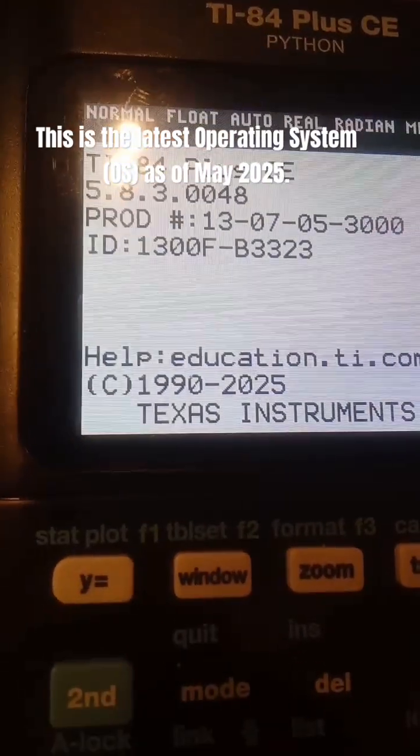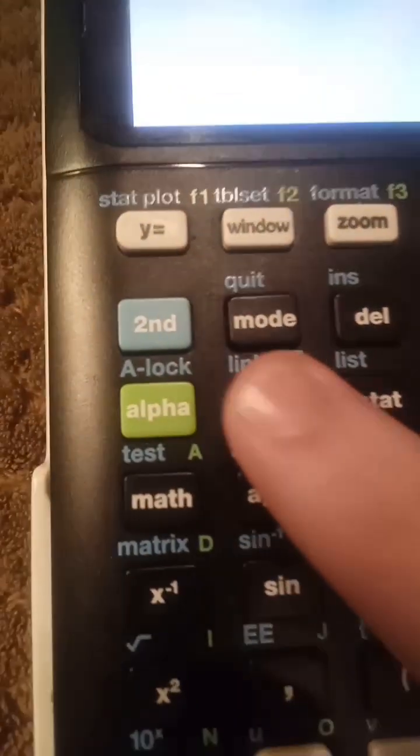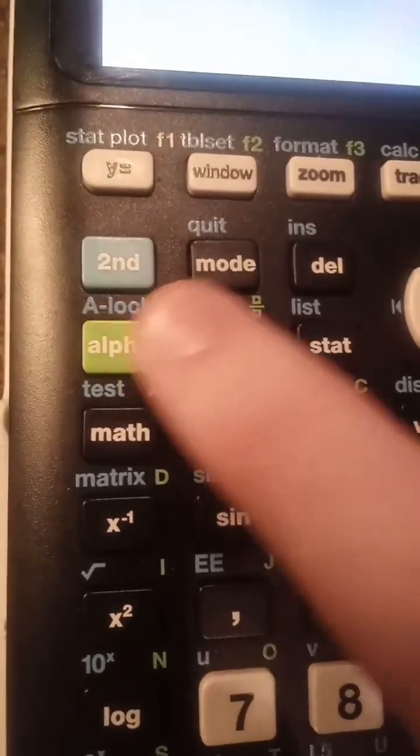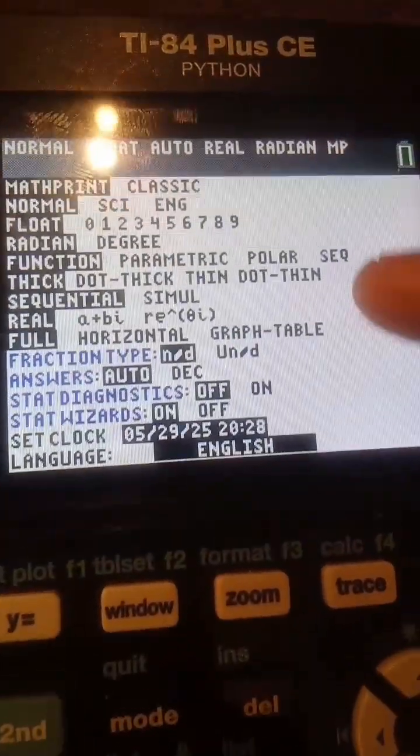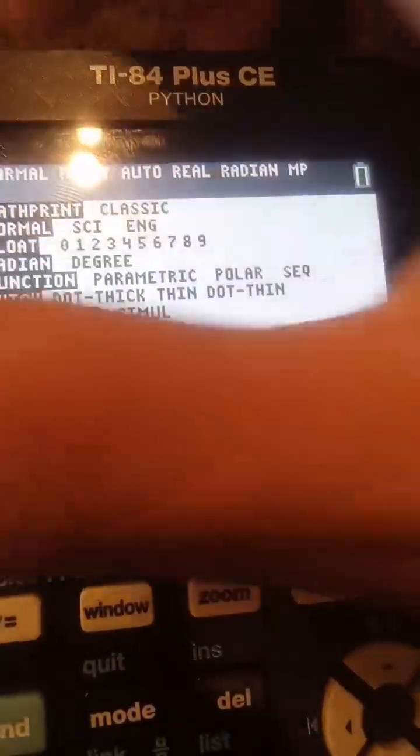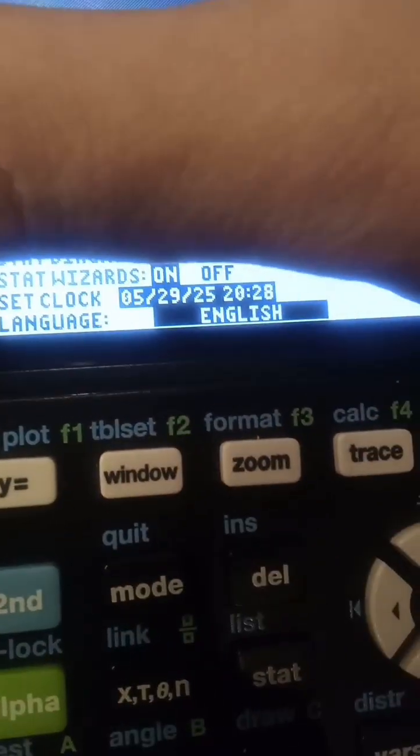So then what you want to do is go into mode, that's this key right here next to the blue second key, to see all of this stuff. You can ignore everything from up to here. What you want to worry about is the language.